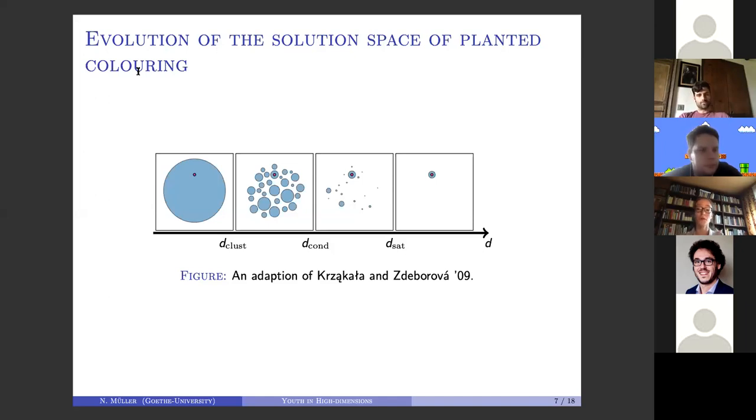As you increase the degree, first this number of colorings shatters into an exponential number of clusters. Then one of these contains your planted coloring. After this second threshold, this cluster in which the planted coloring sits contains more colorings than all the other clusters together.